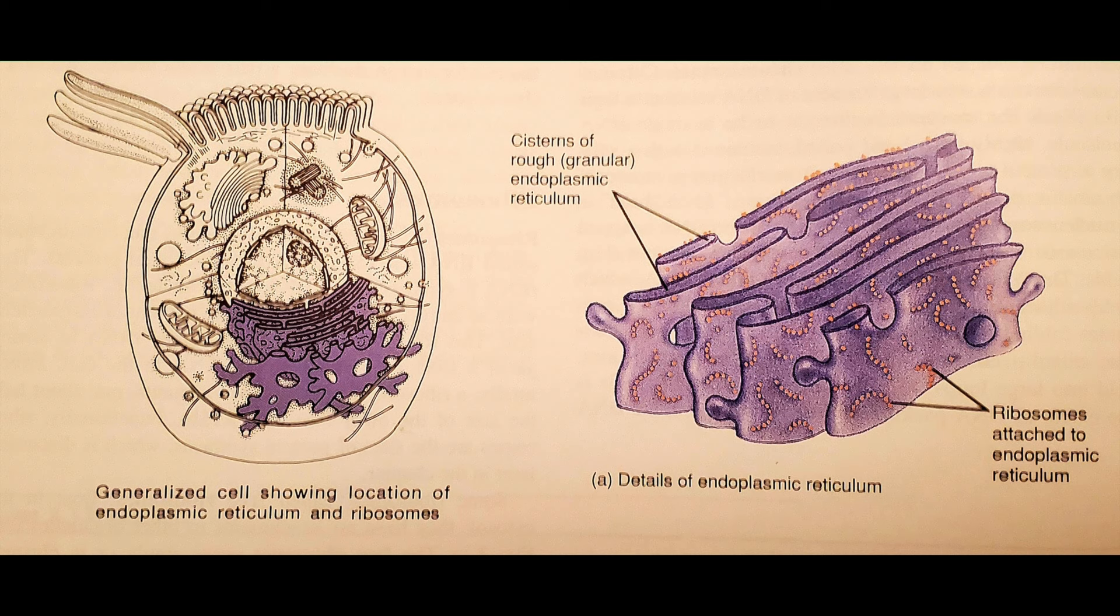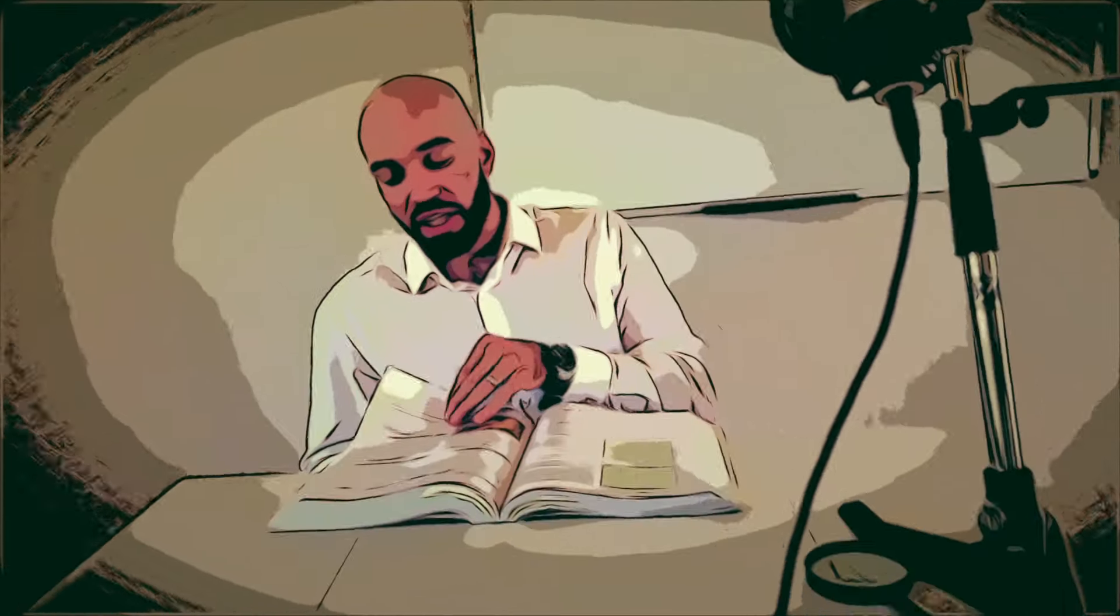Connected to the envelope, we got the rough endoplasmic reticulum, covered in ribosomes, very particular. We're processing proteins. After the ER they're headed to the Golgi.